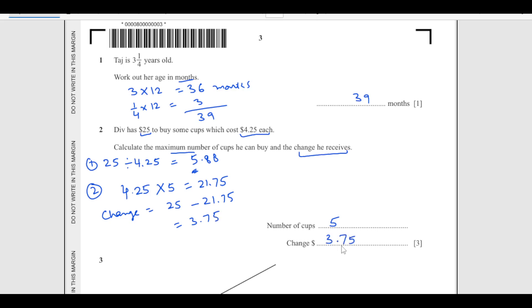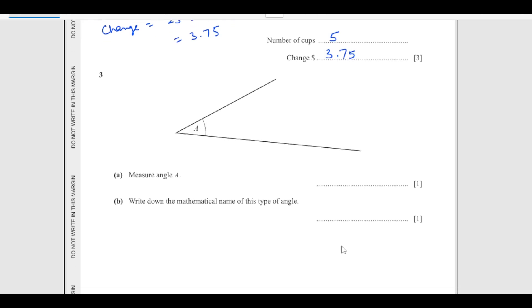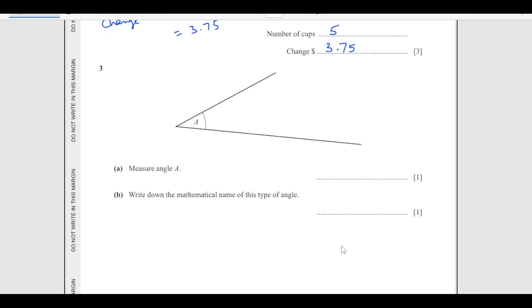Number 3: measure angle A. Start from here, put your protractor at this point, the middle point here. When you measure this, it comes out to be approximately 40 degrees. Your answer may be different because this is a scanned copy. Write down the mathematical name. As this angle is less than 90, this angle is an acute angle.